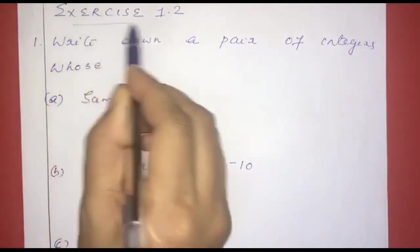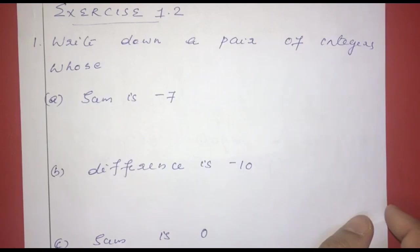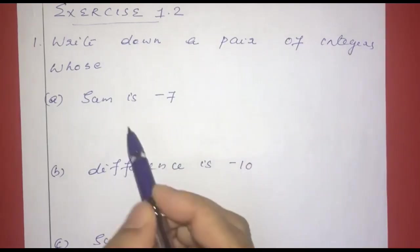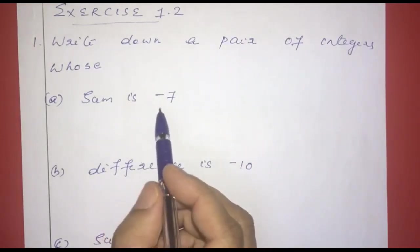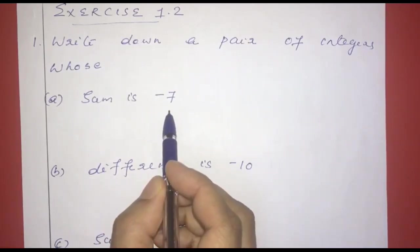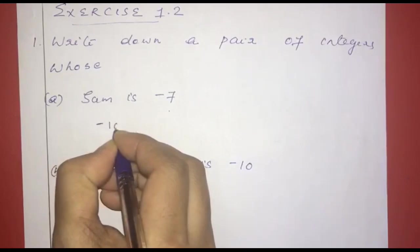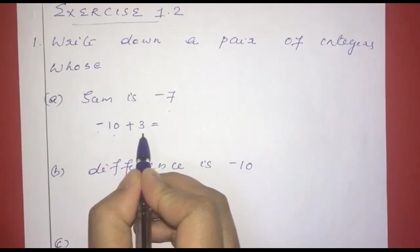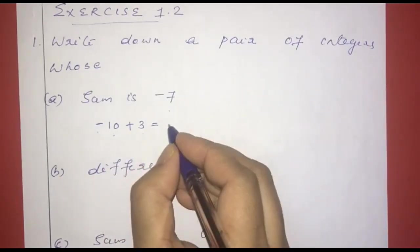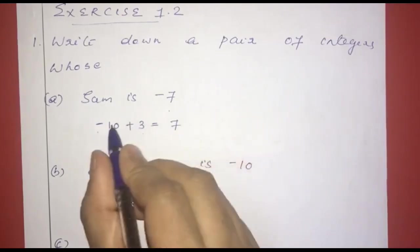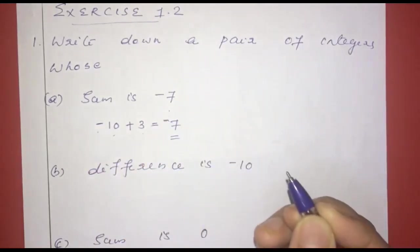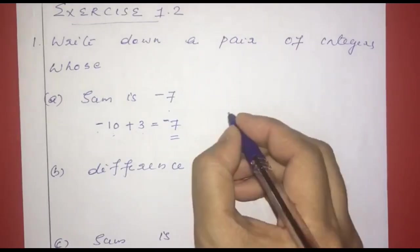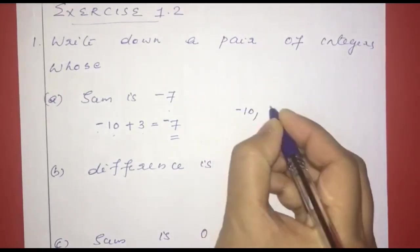In the first question: write down a pair of integers whose sum is negative 7. We need numbers that add to negative 7. For example, negative 10 plus 3. The answer is negative 7. So the pair is negative 10 and 3.